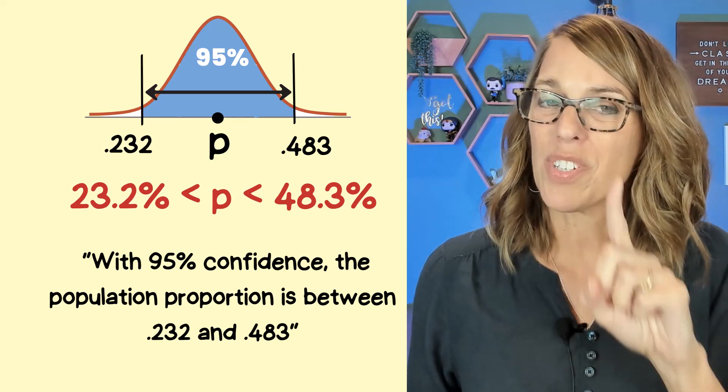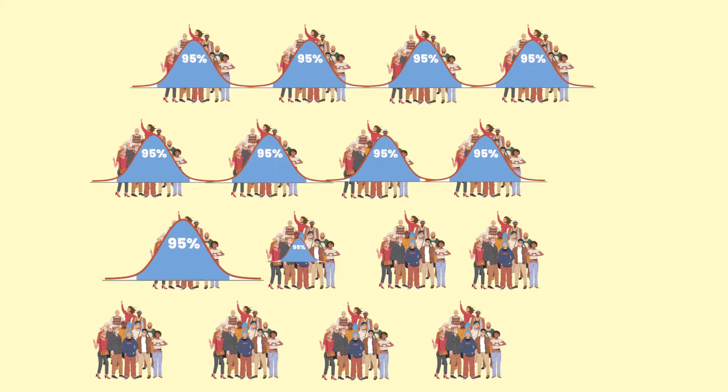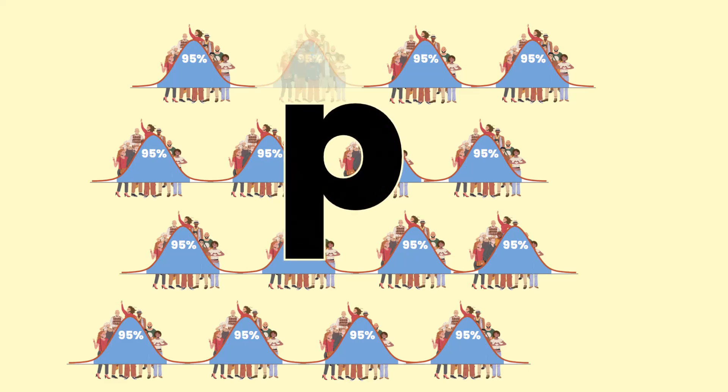Well, remember, this was just one sample of many that we could have taken. If we were to build confidence intervals for every single one of those, 95% of them would contain the true proportion.